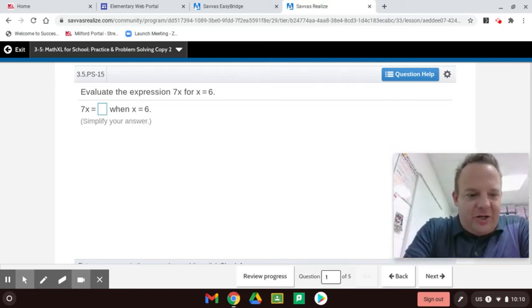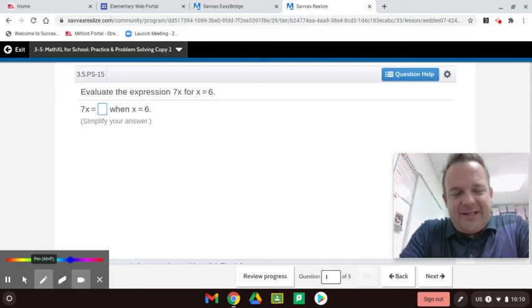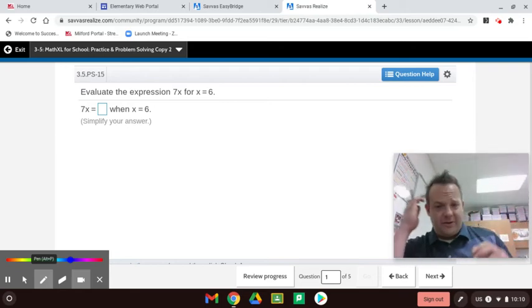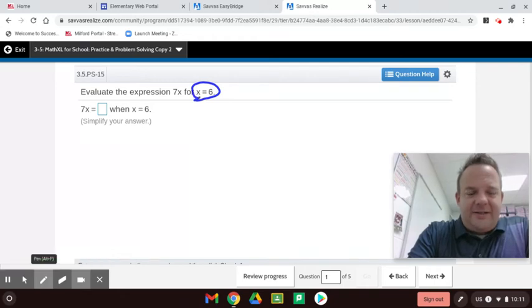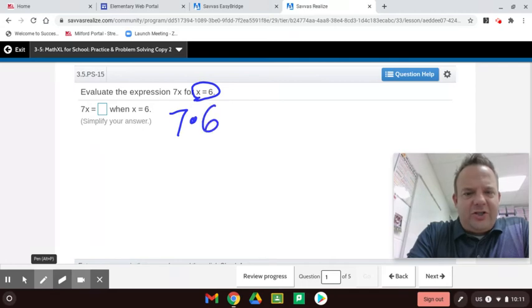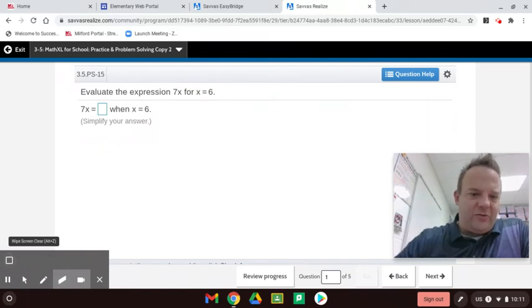Here's an algebraic expression, and you can see we have 7 times x. 7x means 7 times x. That's important. The 7 next to the x is called a coefficient, and the x is a variable. That's important vocabulary to know. When the coefficient and variable are right next to each other, that's multiplying. Now, here we're saying x equals 6. So you take the algebraic expression and turn it into a numerical expression, 7 times 6. That equals 42.